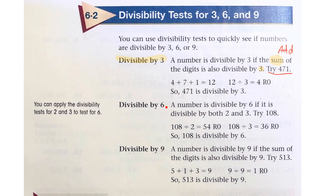Divisible by 6. A number is divisible by 6 if it is divisible by both 2 and 3. It is divisible by 2 if it's an even number, and it's divisible by 3 if you add up all the digits and divide them by 3 with no remainder.